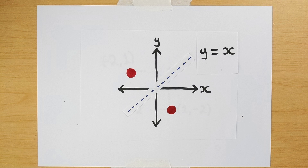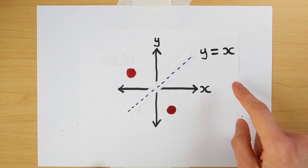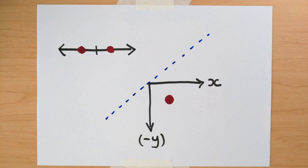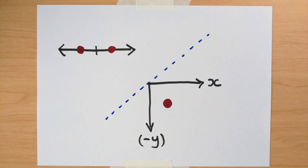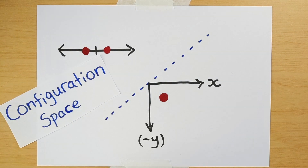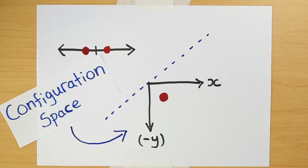So any point reflected through this line here will result in another point representing the same configuration. That means if we want a space where every point represents a distinct state of the system, we should consider only half of this plane. Now we have a space in which each point represents a unique configuration, and we don't need to separately specify that our particles are indistinguishable — that fact is baked into the space of configurations, which is called the configuration space.